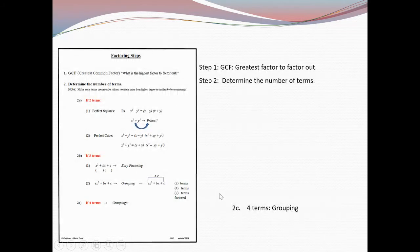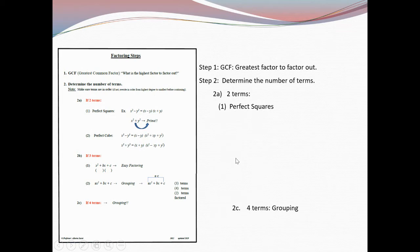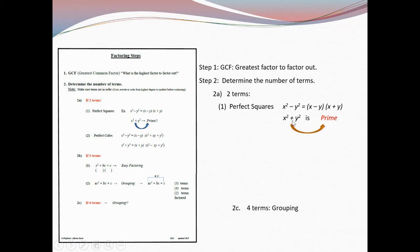Now let's do two terms — either perfect squares or perfect cubes. For perfect squares: if you have X² − Y², it factors as (X − Y)(X + Y) — this is called the difference of two perfect squares. If you have X² + Y², you cannot factor it — it's prime. Remember: if there's a plus between two perfect squares, it's prime.